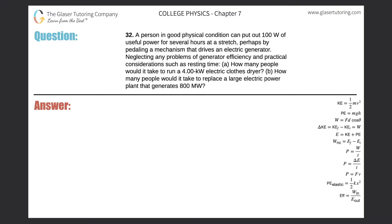Number 32. A person in good physical condition can put out 100 watts of useful power for several hours at a stretch, perhaps by pedaling a mechanism that drives an electric generator. Neglecting any problems of generator efficiency and practical considerations such as resting time, letter A. How many people would it take to run a 4 kilowatt electric clothes dryer? All right.